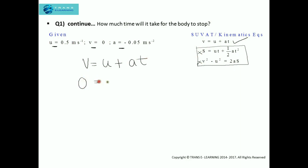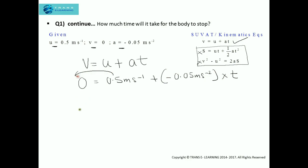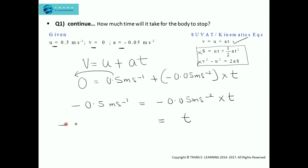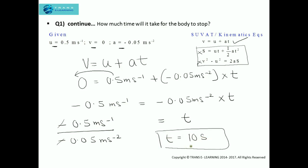So V is 0, U is 0.5 meter per second, and the acceleration is −0.05 meter per second squared, multiplied by time. Rearranging: −0.5 = −0.05 × T, so time equals −0.5 divided by −0.05, which gives 10 seconds. The time taken by the body to stop is 10 seconds.